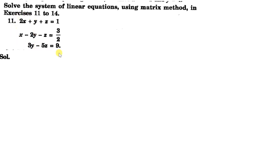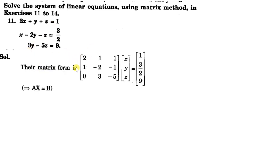First of all, we have to write them in the form Ax equal to b, where A is the coefficient matrix. x is the variable matrix in the form of a column, and b is the constant matrix: 1, 3/2, and 9.